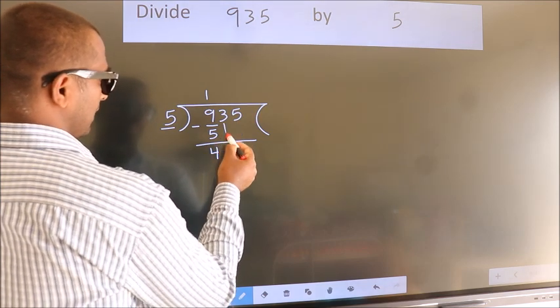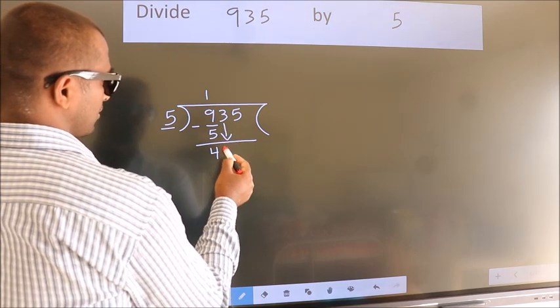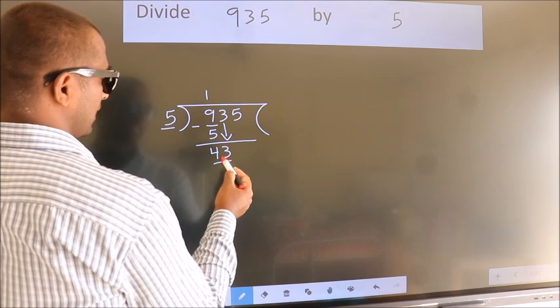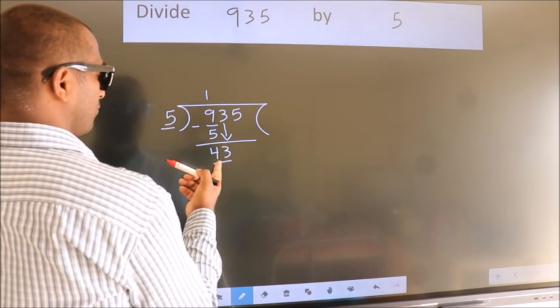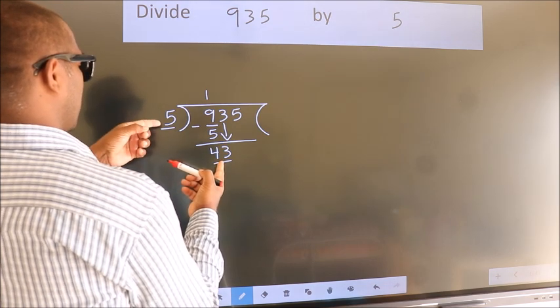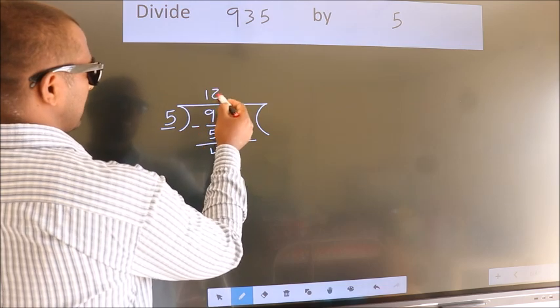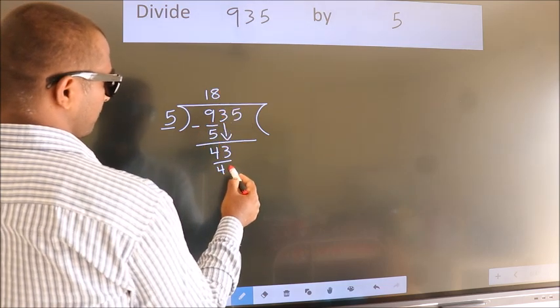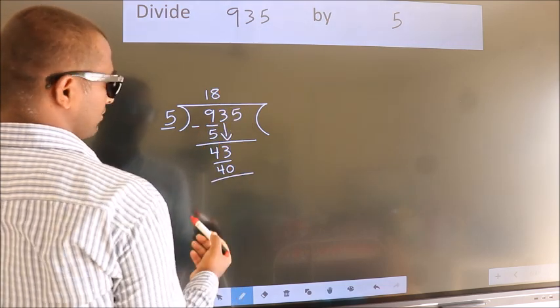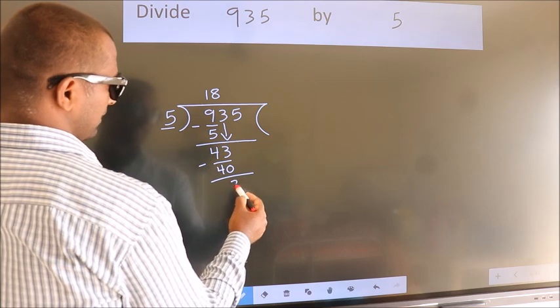After this, bring down the beside number. So 3 down. So 43. A number close to 43 in the 5 table is 5 eights, 40. Now we subtract. We get 3.